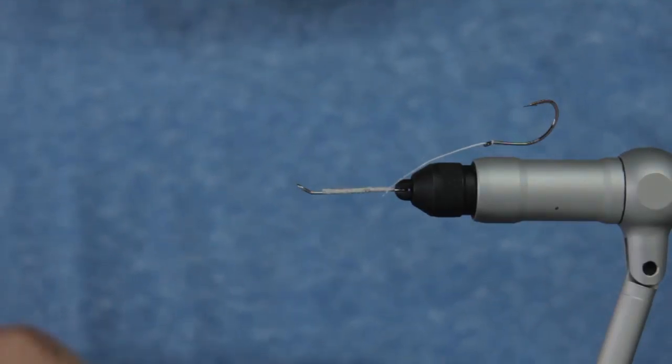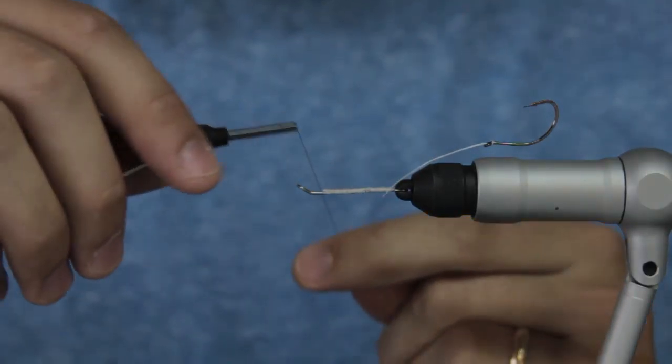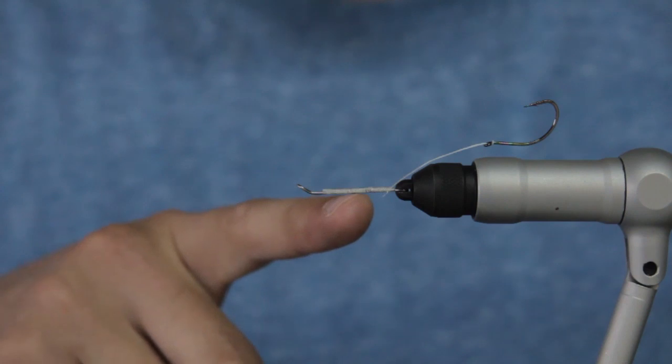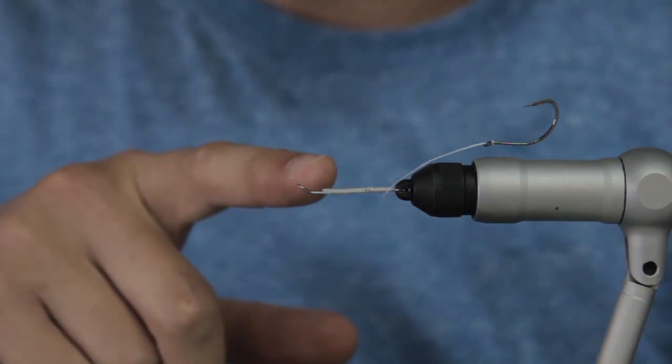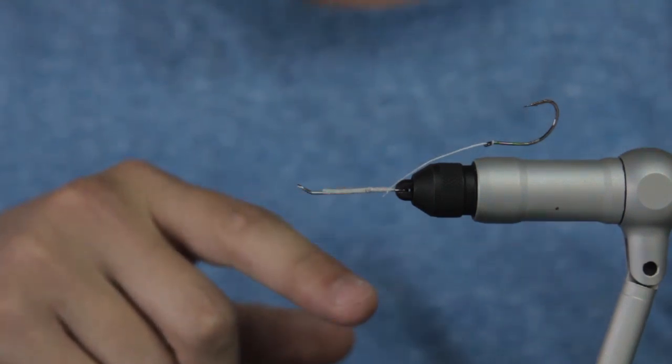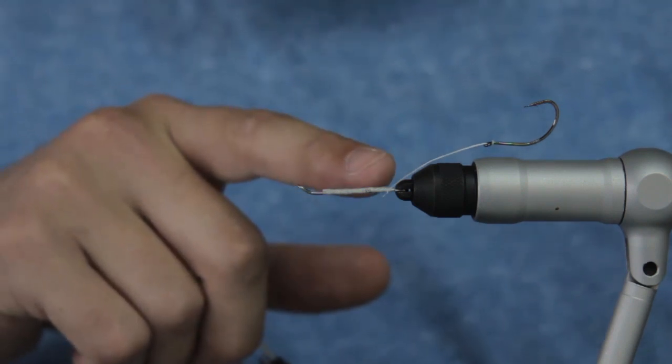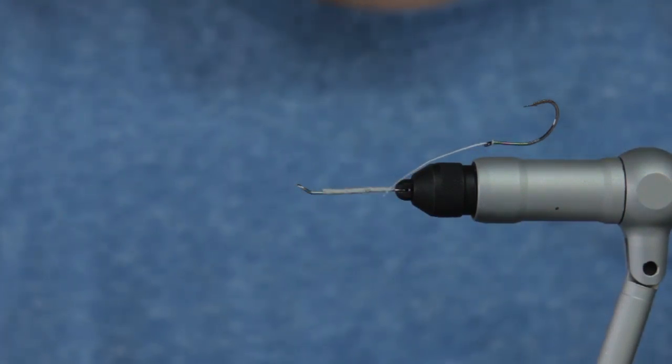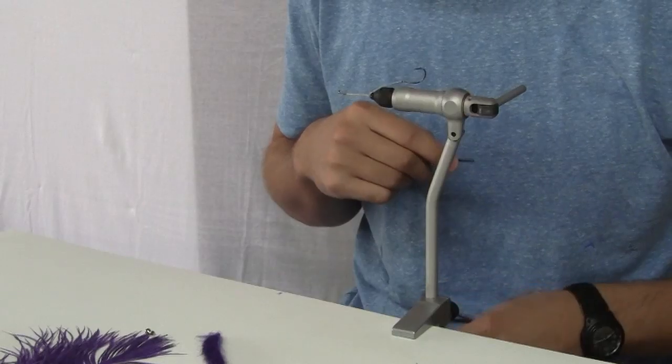Alright, so today we are going to be tying some steelhead flies. As you can see, I already have a 30 millimeter Waddington shank prepped with 25 pound fire line and a size one Mustad drop shot hook.